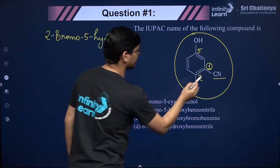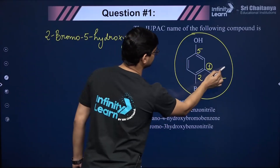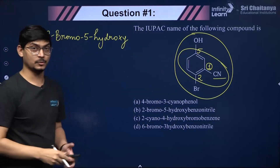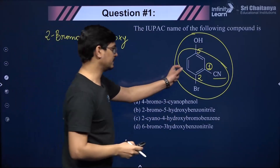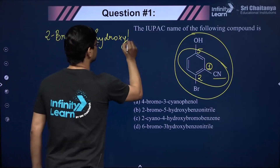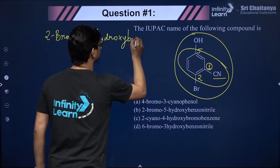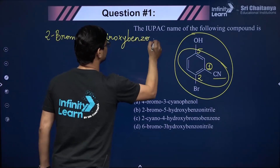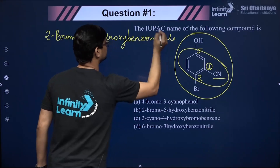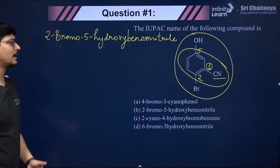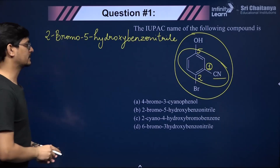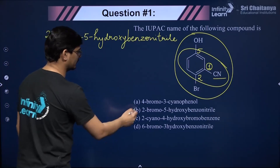Benzene connected to a CN group is called benzonitrile. So the correct IUPAC name of this compound is 2-bromo-5-hydroxybenzonitrile.